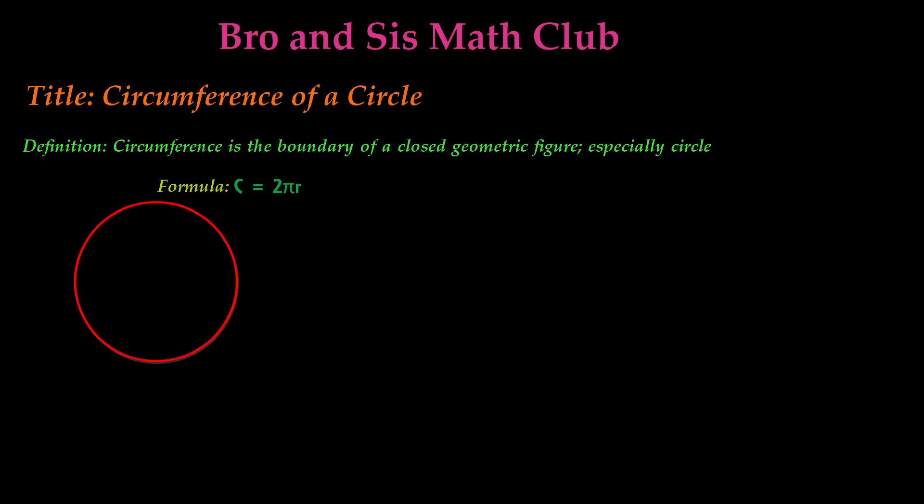Hey guys, welcome back to Bryan's CIS Math Club. Today we'll be learning about the circumference of a circle. So to begin with, let's go ahead and take a look at the definition of circumference. Circumference is the boundary of a closed geometric figure, especially a circle.